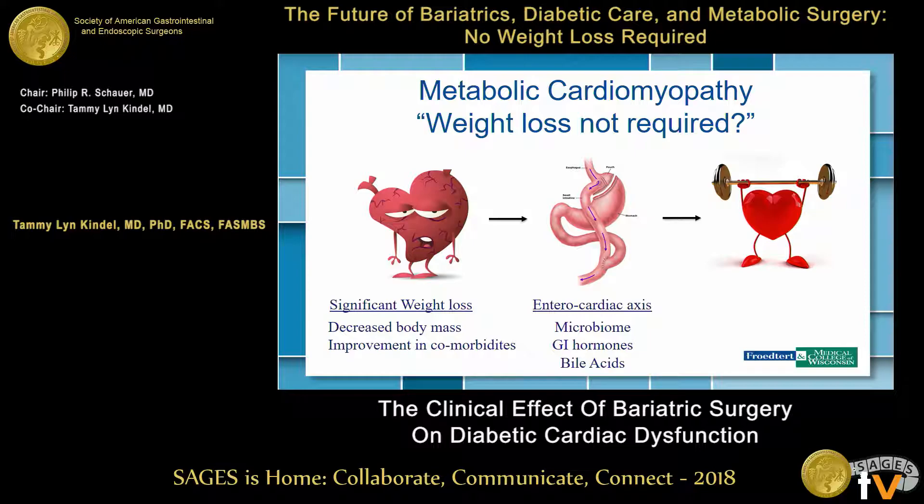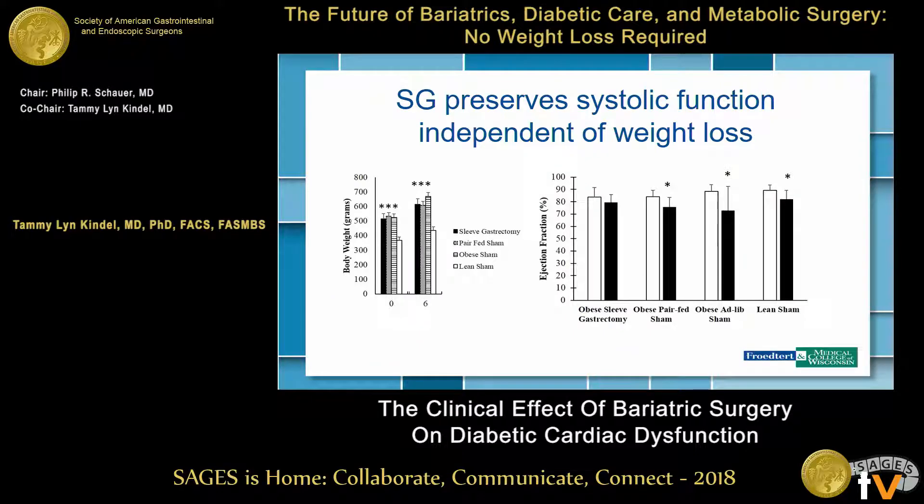Potential mechanisms may include the microbiome, changes in GI hormones, or bile acids. This is unpublished data from our laboratory. Because heart failure is such a complex disease, taking this back to rodents is attractive — you can weight-match, food-match, and comorbidity-match them. We used the obese Zucker rat, a model of metabolic syndrome and cardiac dysfunction. The most important comparison is sleeve gastrectomy versus pair-fed animals — animals dieted to lose the same amount of weight as the sleeve gastrectomy group — to isolate weight-loss-independent mechanisms.